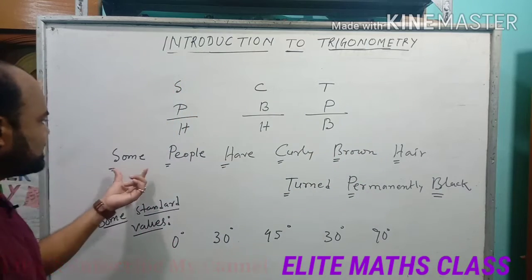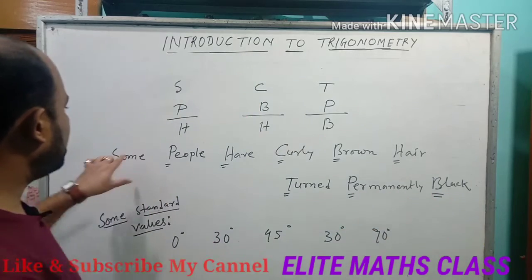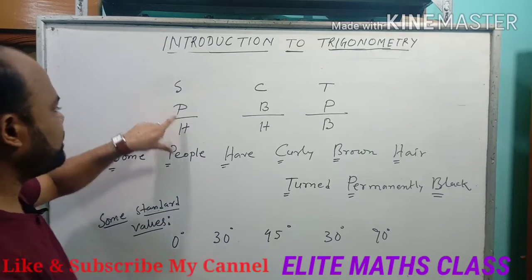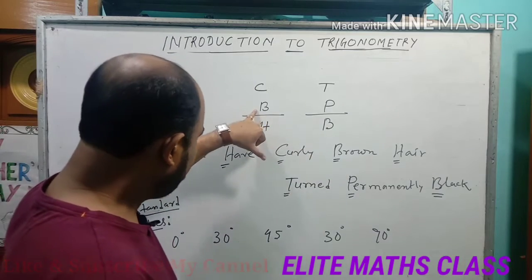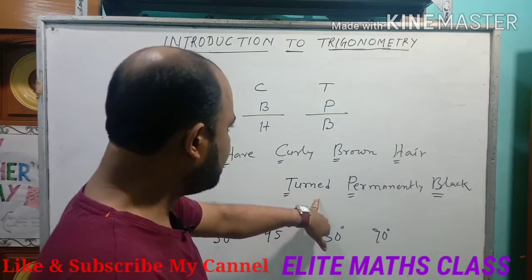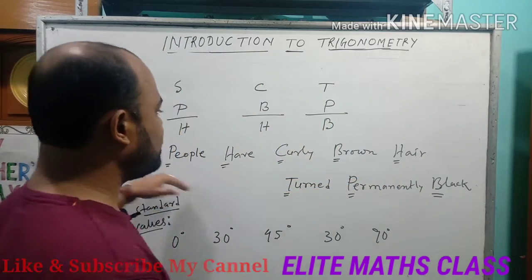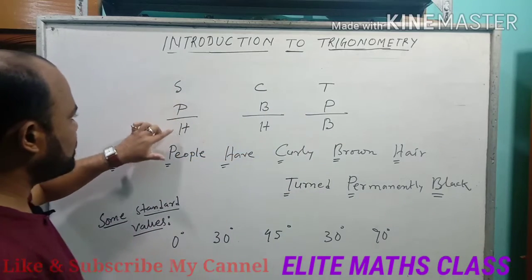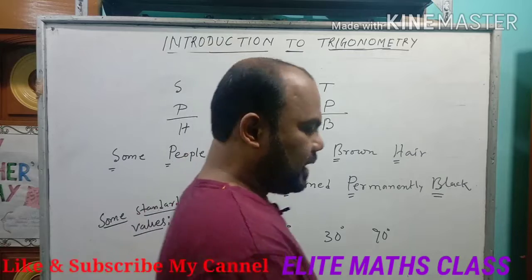See the statement: 'Some People Have Curly Brown Hair Turned Permanently Black.' Using the underlined first letters — S for sin, P for perpendicular, H for hypotenuse; C for cos, B for base, H for hypotenuse; T for tan, P for perpendicular, B for base. By the first letters of this sentence, you can easily memorize these three relations: sin = perpendicular/hypotenuse, cos = base/hypotenuse, tan = perpendicular/base.